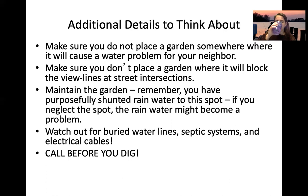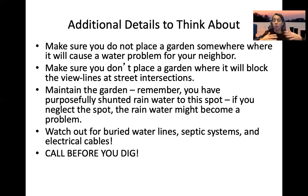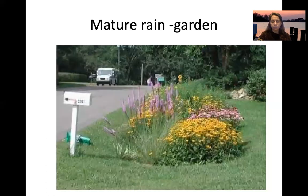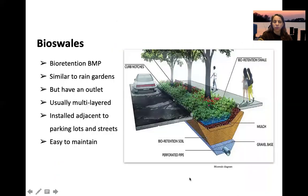Additional considerations: don't place the rain garden so overflow goes into a neighbor's yard, or so growing plants block intersections. Maintain the garden properly to avoid a muddy mess. Watch for buried water lines, septic systems, and electric cables — call before you dig. Here's an example of a mature rain garden with a rock swale leading into it.